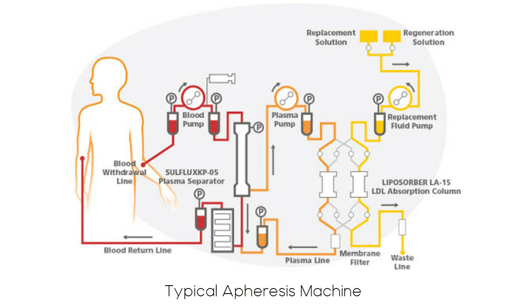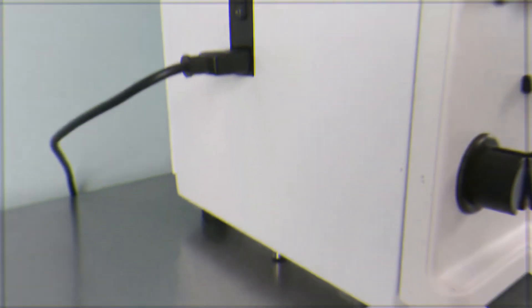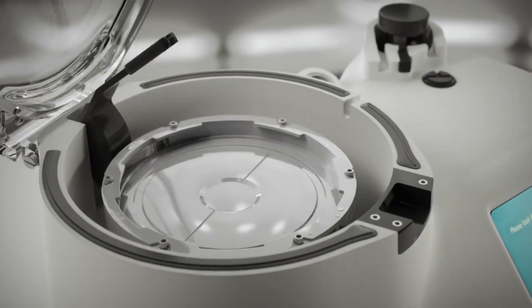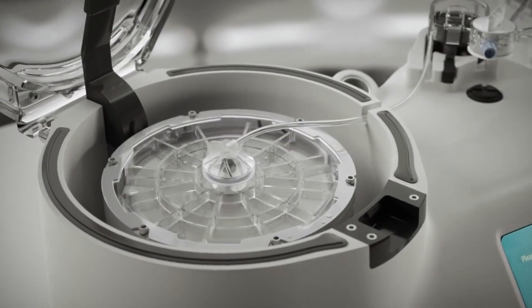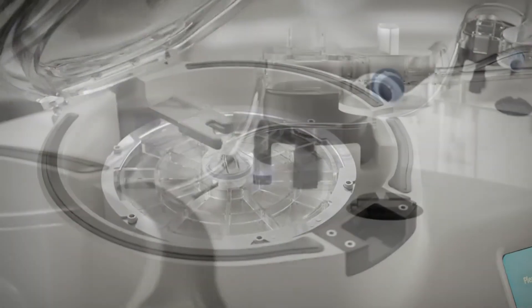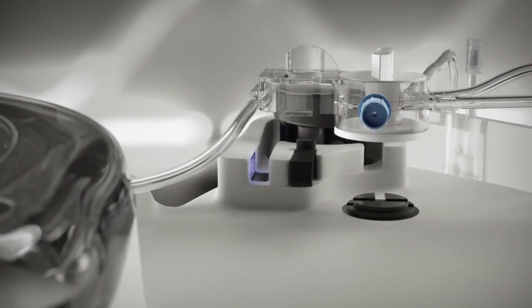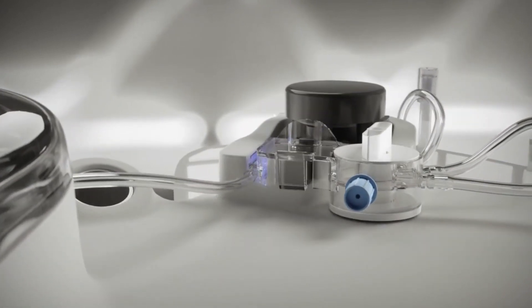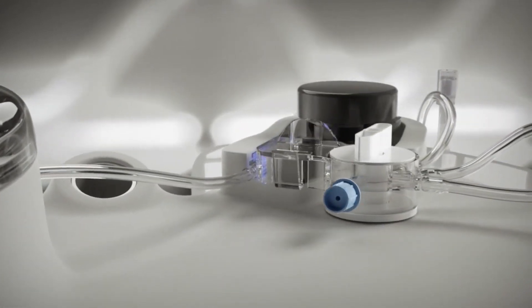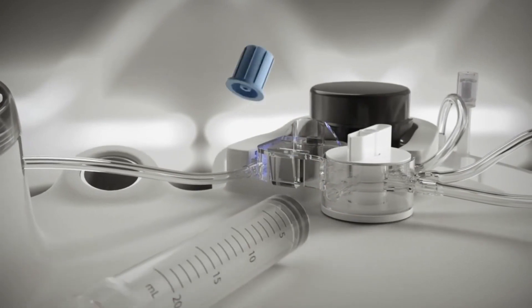Rotary peristaltic pumps draw blood from the patient or donor and pump blood through filters or centrifuges. Filters separate blood components based on size, centrifuges separate by density. Optical sensors detect plasma cell interfaces to minimize contamination from other components. Centrifuges have inlet and outlet ports and compartments to keep components separated.